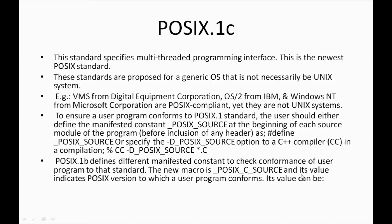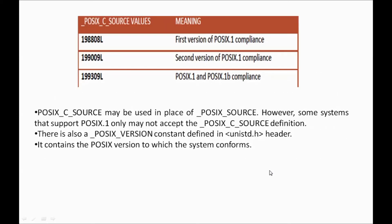The _POSIXC_SOURCE version values indicate which version of POSIX.1b you are using — there is a first version, a second version, and a third value that works for both POSIX.1 and POSIX.1b standards. Using the third value is recommended. Note that some systems may support _POSIXC_SOURCE instead of _POSIXC_SOURCE, and about 95% of systems will accept either form.